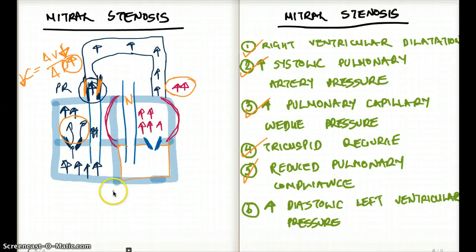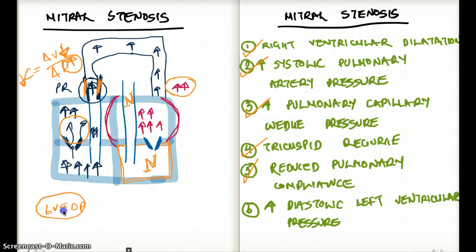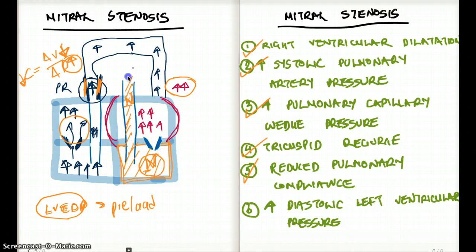What is the left ventricular pressure going to be? Is it going to be increased? No — because the pressure is all backed up in the left atrium, not in the left ventricle. It's not going to be decreased either — it's going to be normal. The pressure in the aorta is also going to be normal. What about LVEDP — left ventricular end-diastolic pressure, essentially the preload? The preload is also going to be normal. Anything from the left ventricle onto the aorta is going to be normal.